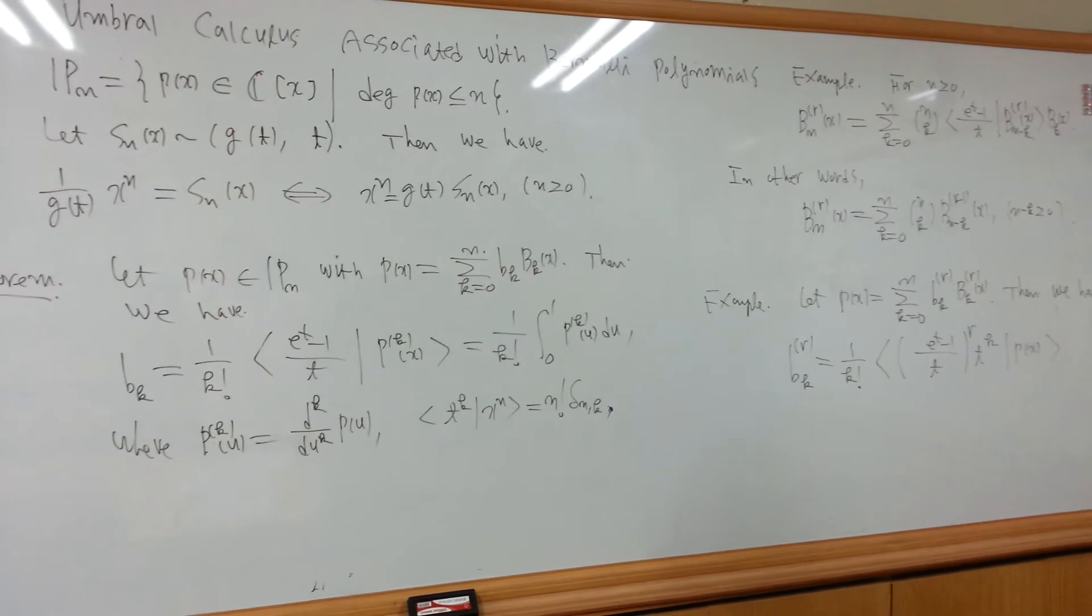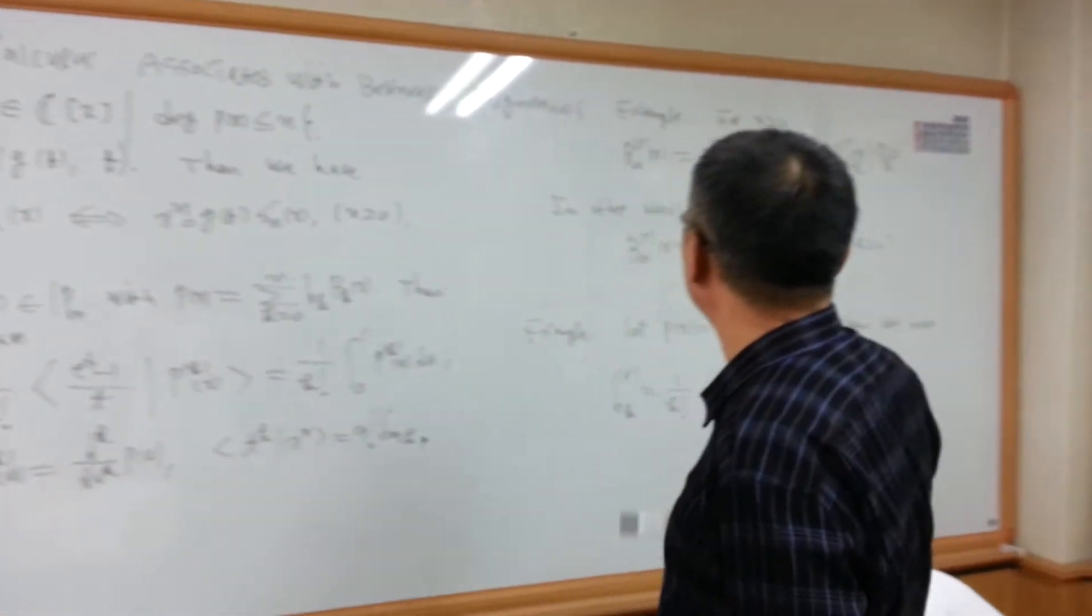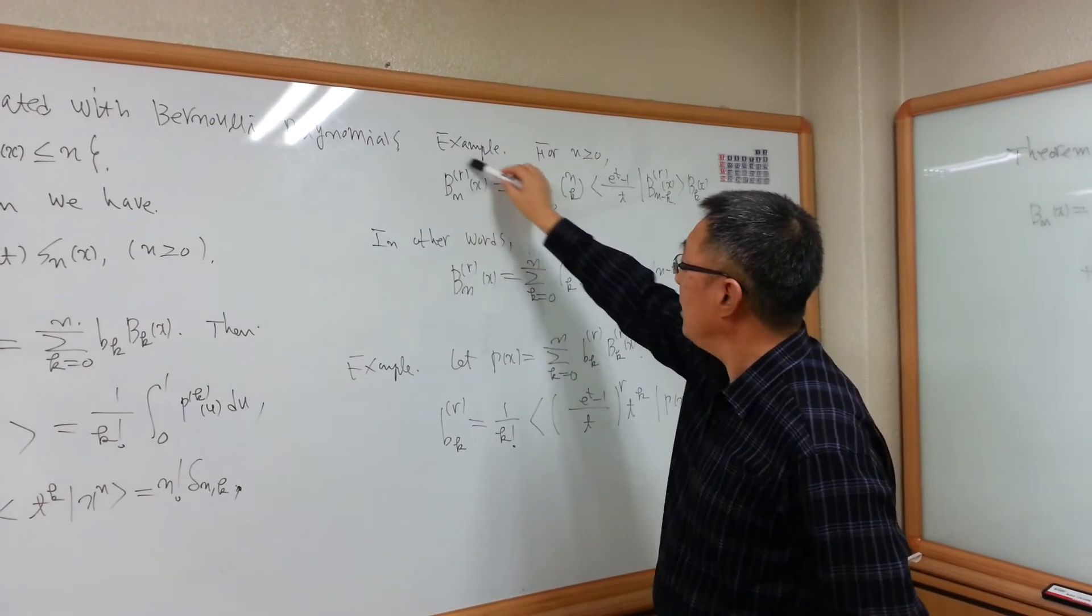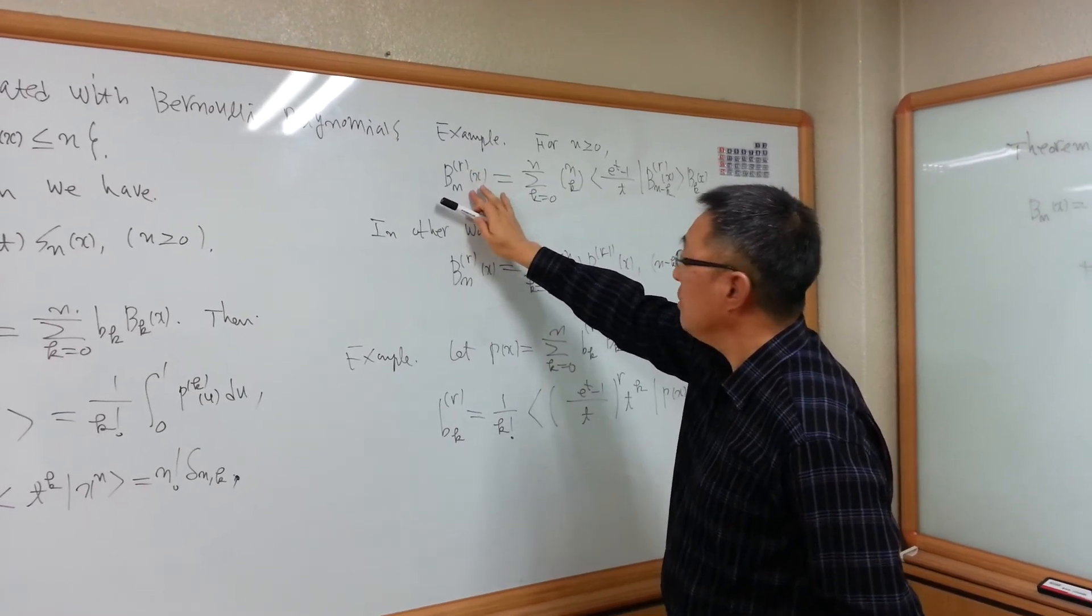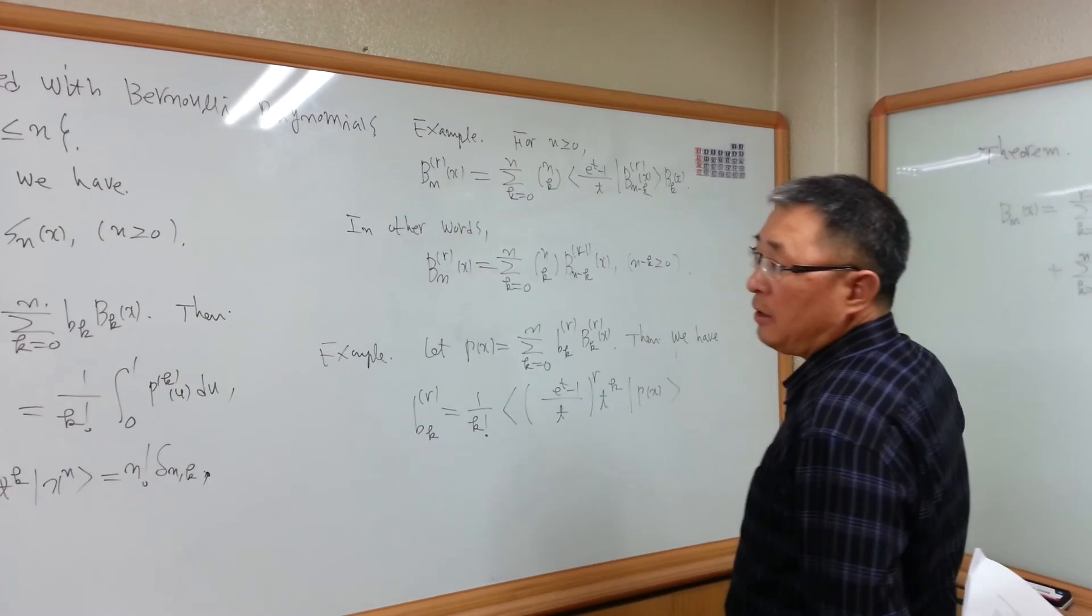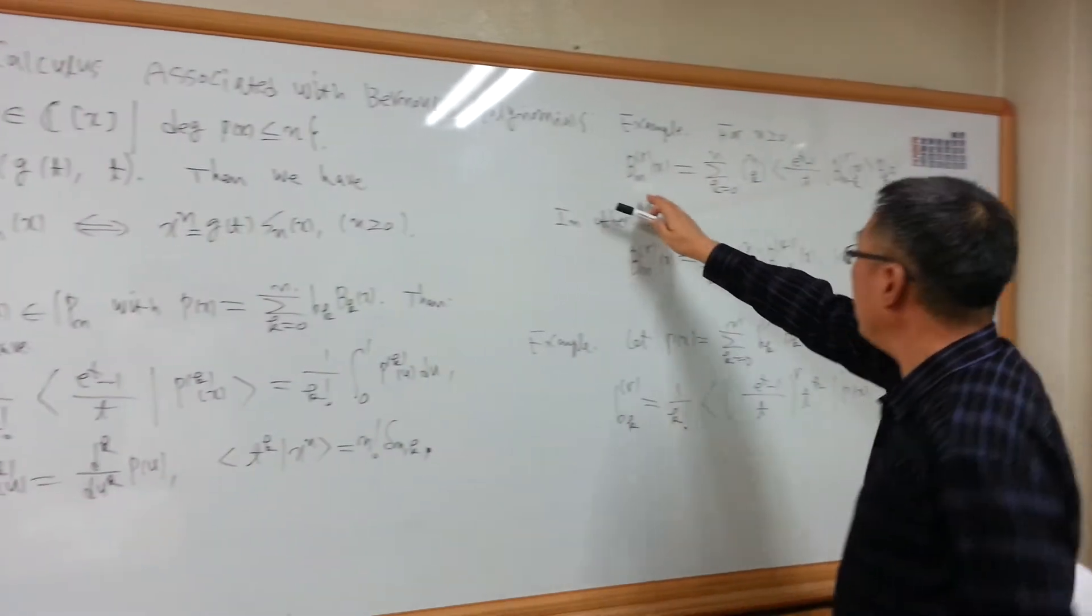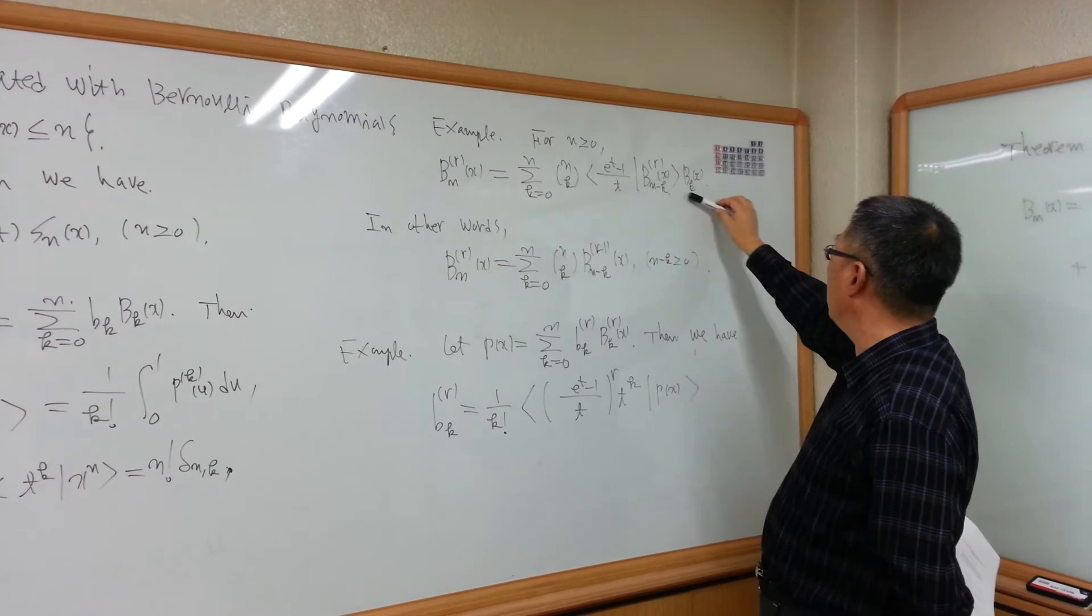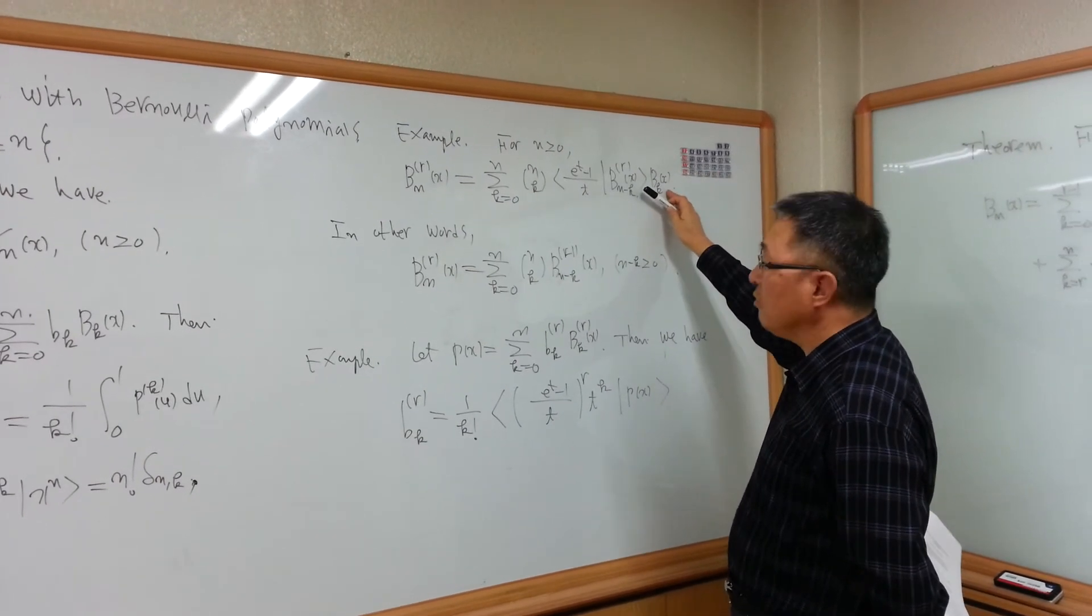For example, if we take Px equal to polynomial Bn^R(x), we note that the Bernoulli polynomial of order R is a polynomial with degree n. From our main theorem, we can derive the high-order Bernoulli polynomial can be written by some linear combination of Bernoulli polynomials.